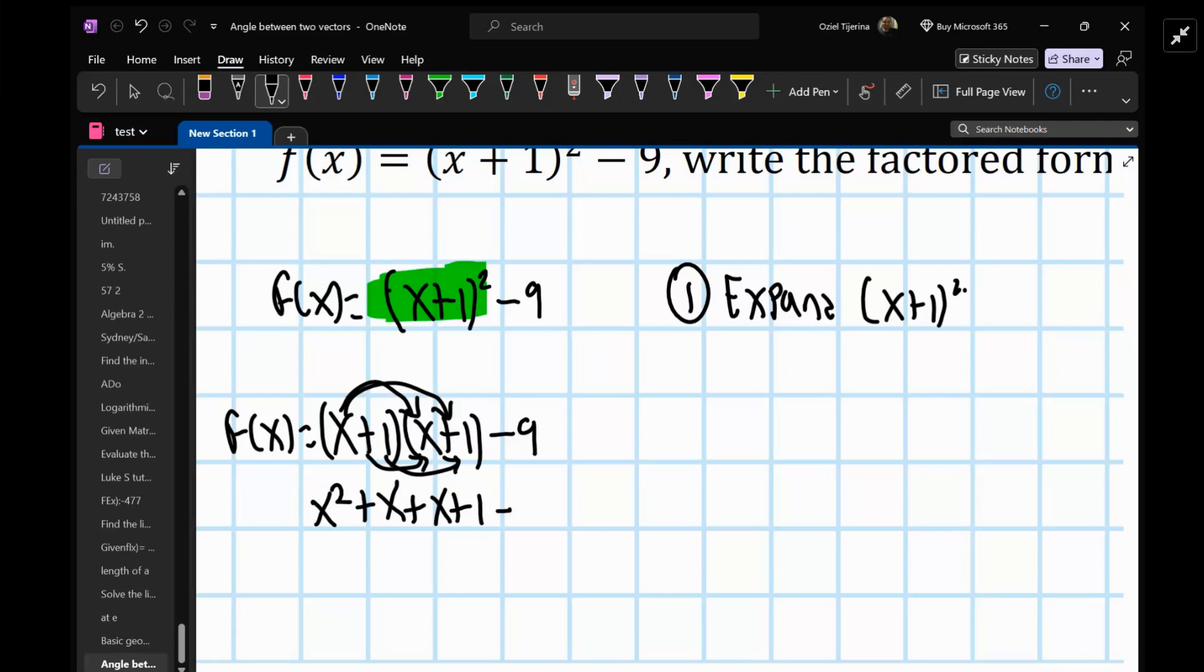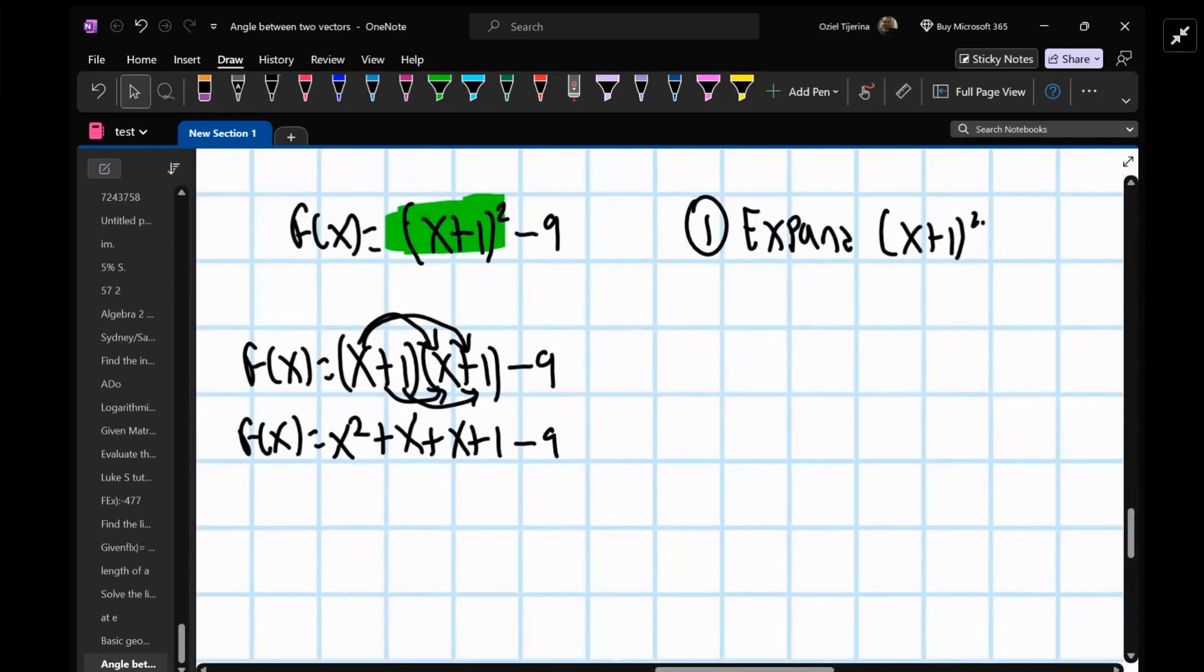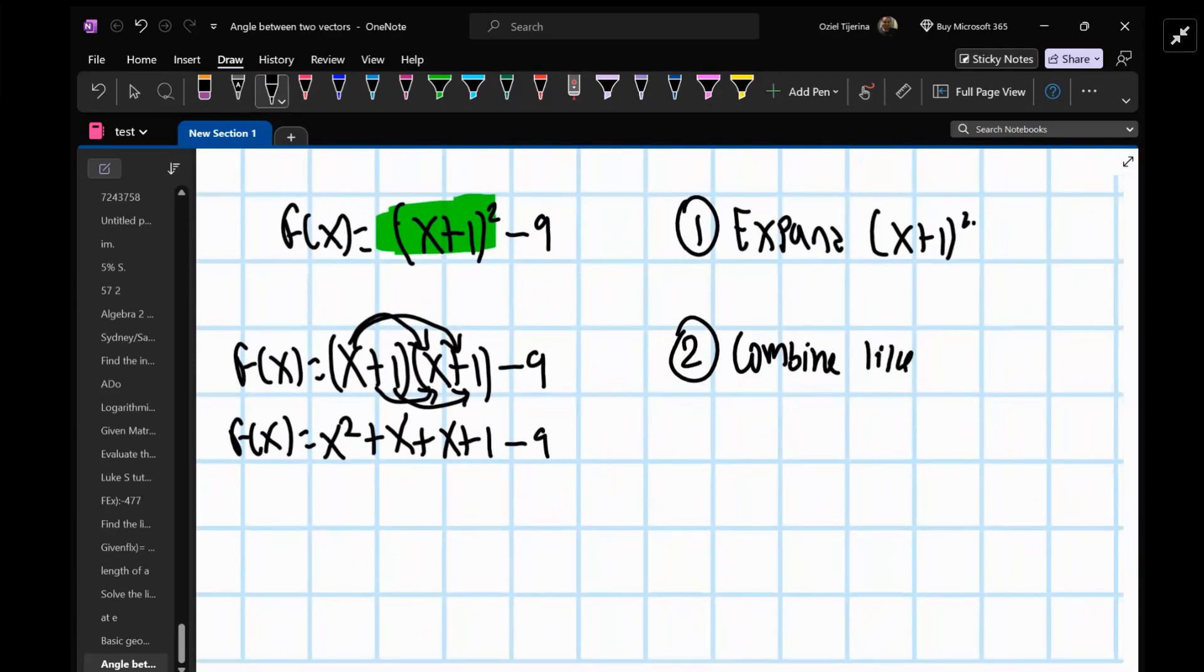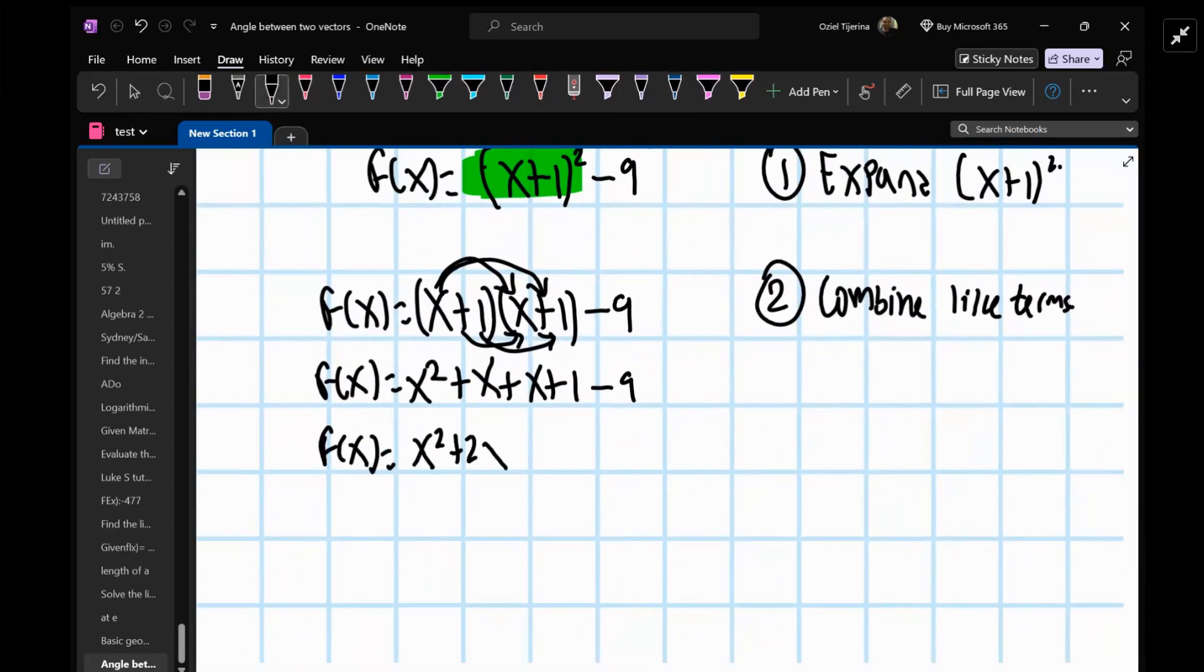And we want to keep things aligned here. So number two, combine like terms. Okay, so I want to combine like terms. We have f(x) equals x² + 2x + 1 - 9.